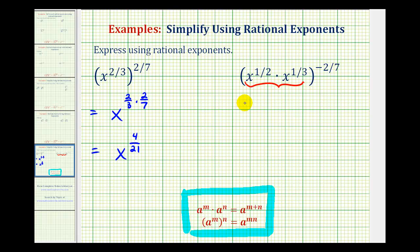So in the parentheses, we'll have x raised to the power of one-half plus one-third. And all this is still raised to the negative two-sevenths power.